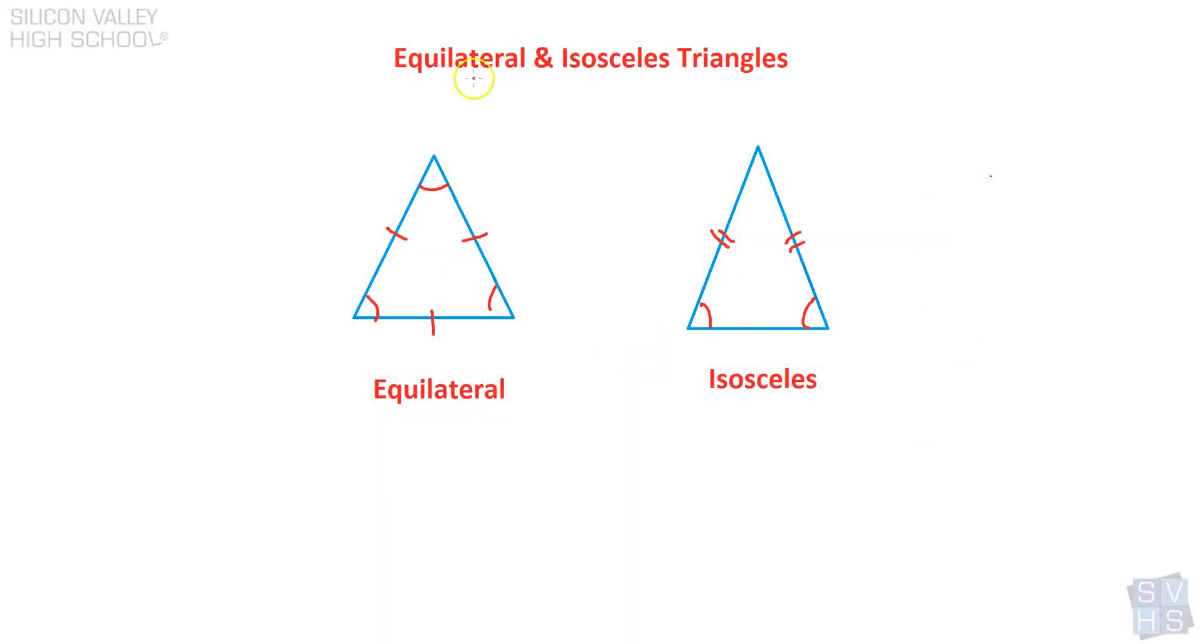Two very specific types of triangles are equilateral and isosceles triangles. They come up in geometry all the time, you'll see them on the SATs and pretty much every math class, and they have a few really distinct characteristics that define them.